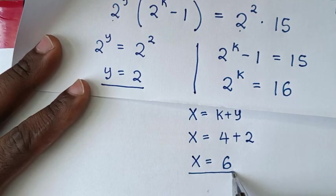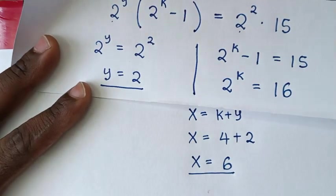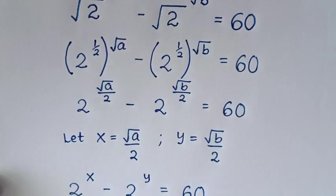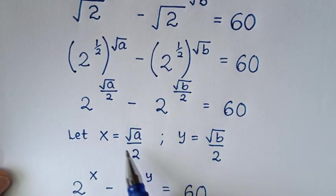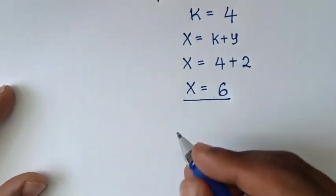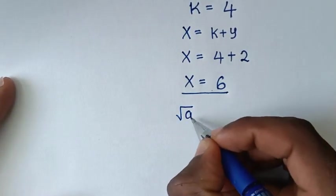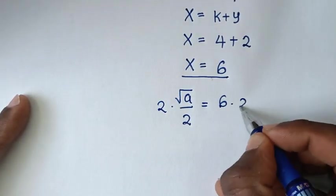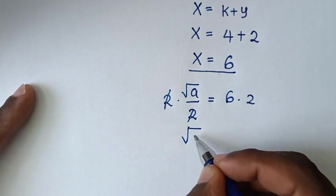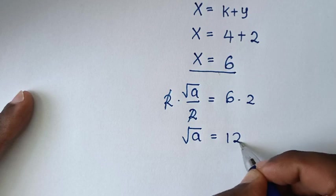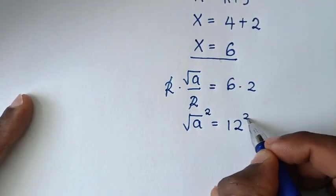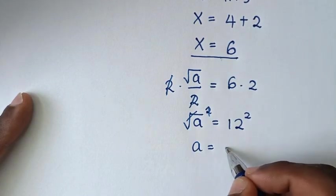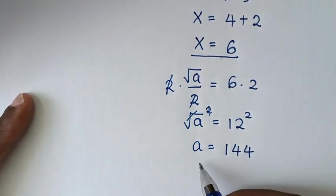Now we're supposed to find the values of a and b. We already have k equals 4 and y equals 2. From x equals k plus y, x equals 4 plus 2, which is 6. Since x equals square root of a over 2, we have square root of a over 2 equals 6. Multiplying both sides by 2, square root of a equals 12. Squaring both sides, a equals 12 squared, which is 144.